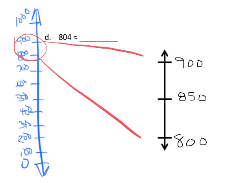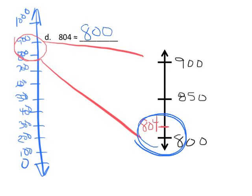So the idea would be, okay, where does 804 live in this interval? We don't have to be totally perfect. We just know it lives way down here, somewhere down here. So there's 804, which means 804 rounds down to 800. So it is approximately 800.